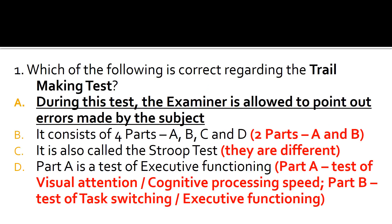B is false because the test consists of two parts only, A and B. C is false because the trail making test is different from the Stroop test. D is false because it is part B which is a test of executive functioning, while part A is a test of cognitive processing speed.